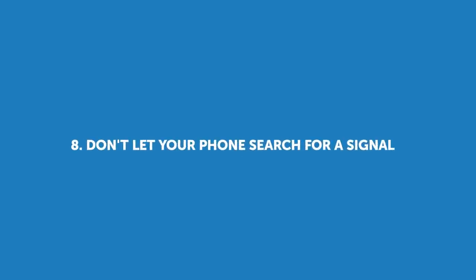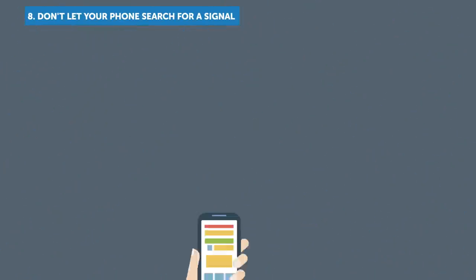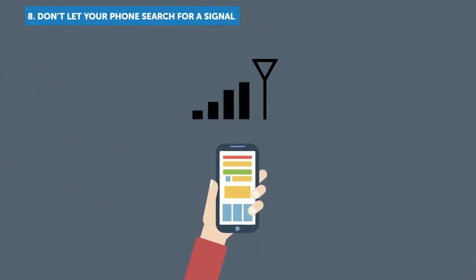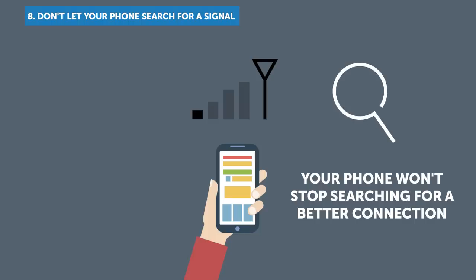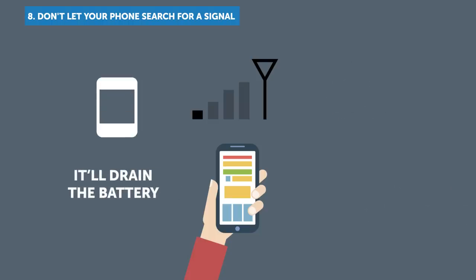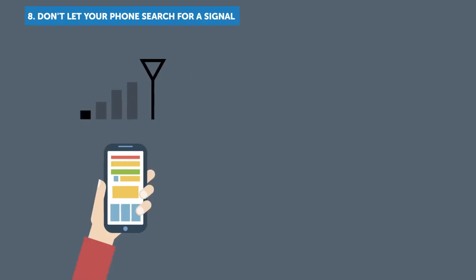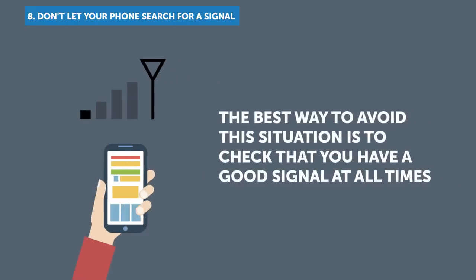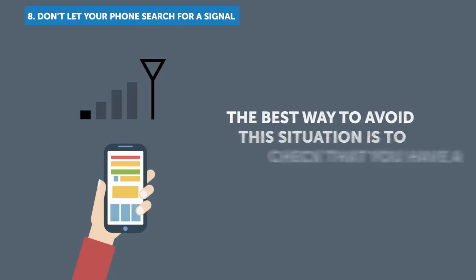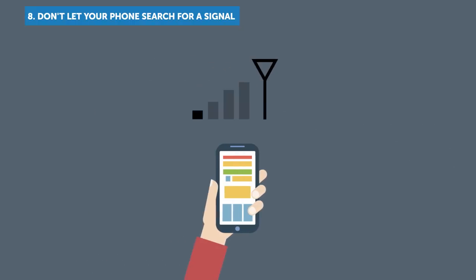8. Don't Let Your Phone Search For A Signal. If you're ever in an area where you have poor cell reception, your phone won't stop searching for a better connection, and doing this it'll drain the battery. Ever forgotten to put your phone on Airplane Mode during a flight? Exactly! The best way to avoid this situation is to check that you have a good signal at all times. And if you notice the signal isn't perfect, just turn on Airplane Mode.